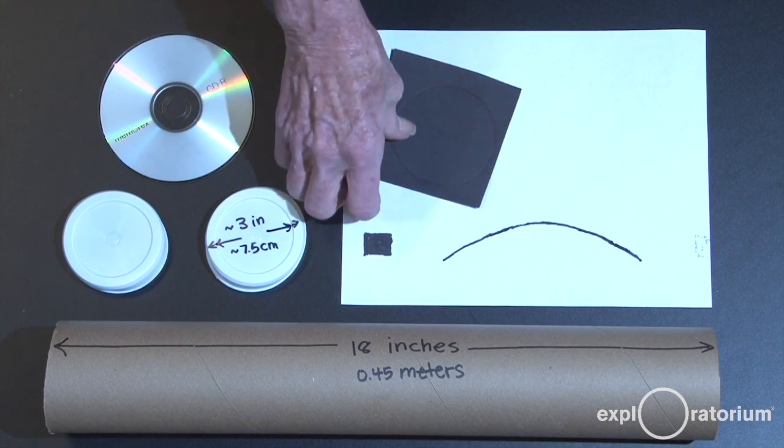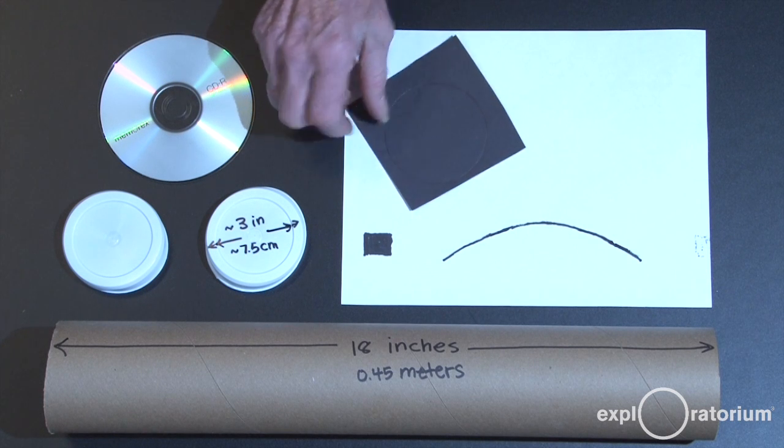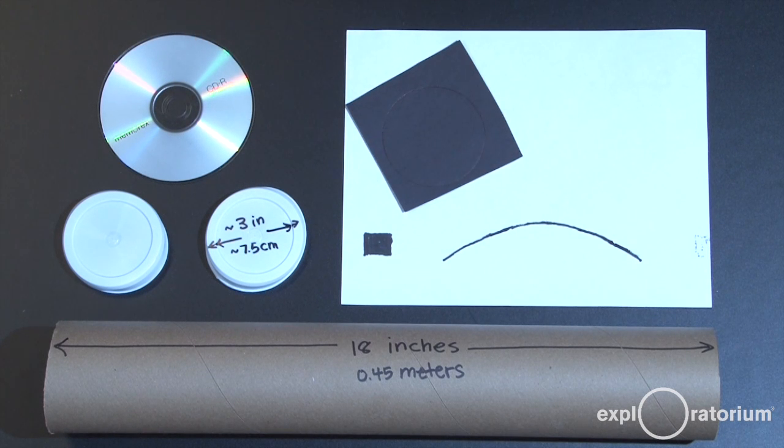You'll need a piece of construction paper, which we're going to cut our slit in, and you'll need our cutting guide, which will be available online.